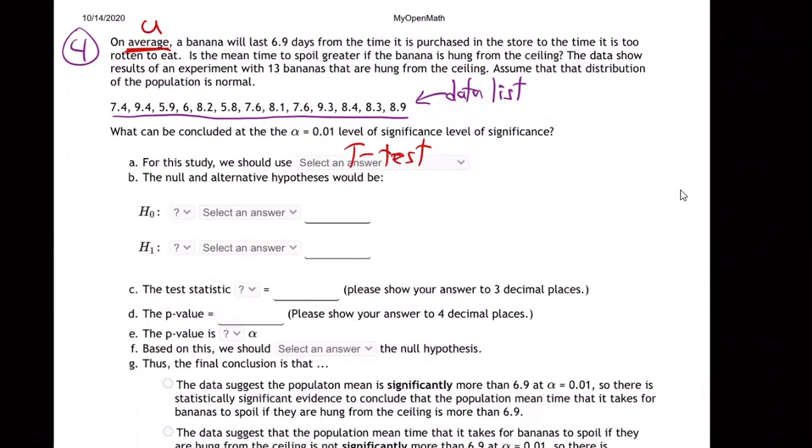All right. And the null hypothesis. Oh, I forgot to do the claim. Always do the claim first. Come up here. Do the claim. It's μ. And what are they saying? What are they claiming? Or questioning or trying to establish? Do you see it in the words? Greater. That is, the mean time to spoil greater. They last longer. In other words, if you hang them from the ceiling. So that's greater. Greater than what? Greater than 6.9, which is the average in general for bananas. Yep. Greater there. That's what's being claimed. They're saying, I think they'll last longer if we hang them from the ceiling. The claim is it's greater.